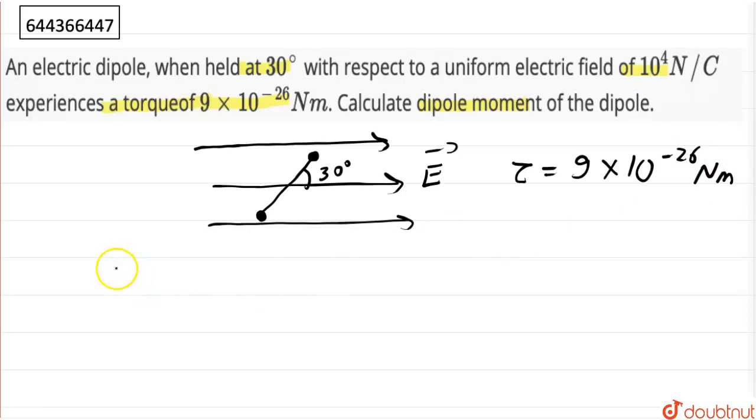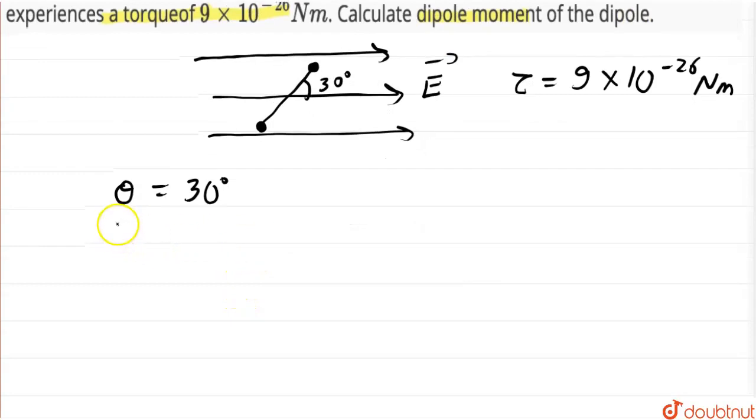Okay, also we have theta, the angle is 30 degrees between the dipole and the uniform electric field and the intensity of electric field is also given.